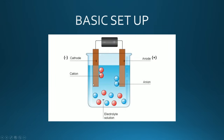This is a very simple setup whereby you've got the battery pack or the power source connected to the two electrodes. One will be a negative one, which is the cathode, the other one will be a positive one, which is the anode. The cathode will attract cations from the electrolyte solution, whereas the anode will attract anions from the electrolyte solution.